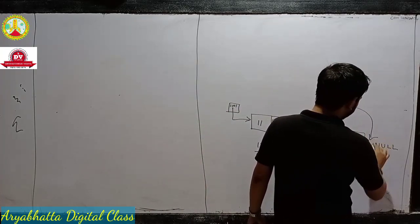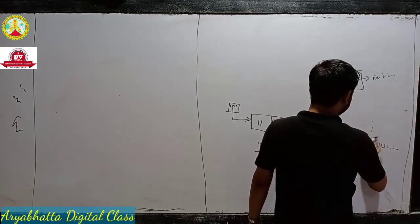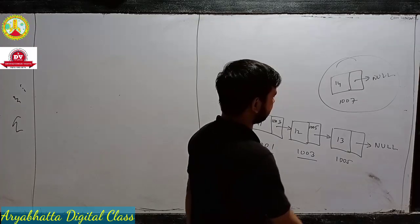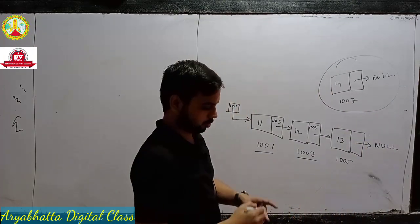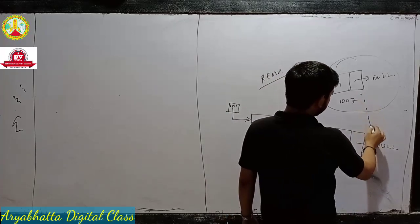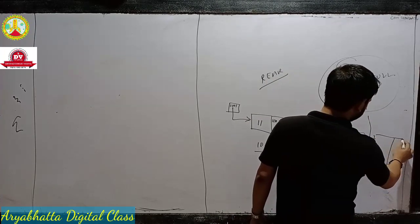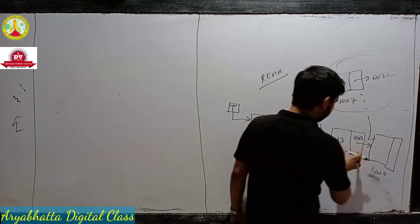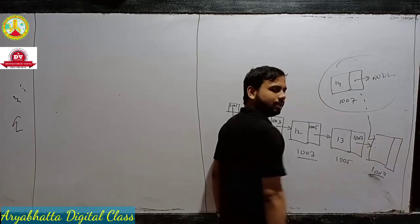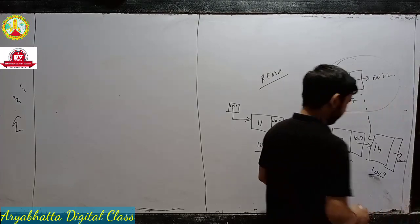Insertion at the end means we have to insert here. Suppose this is a node — first of all it is independent until it is not inserted. Suppose we created a node with data 14107 — this is the new node we want to insert at the end, at the last position. When we insert this node, the null part of the previous last node will now contain the memory address of this new node — for example 1007. Previously that link pointed to null, now it points to 1007 because this node is added after it. And now the new node is null.